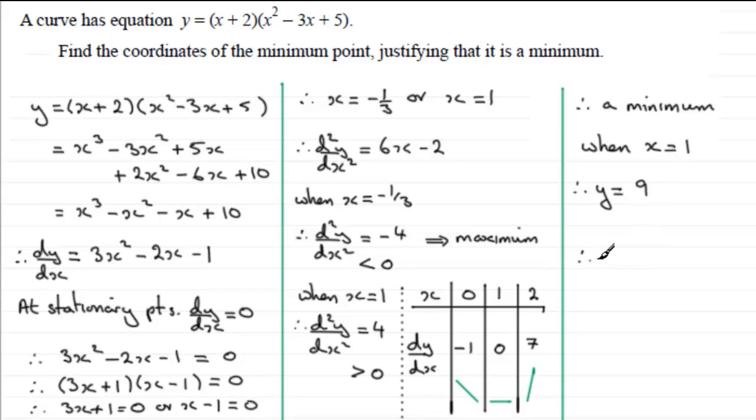So therefore, what we have is that the point (1, 9) is a minimum point. Okay, we'll just finish that question off. If we just put this in, is a minimum point. Okay?